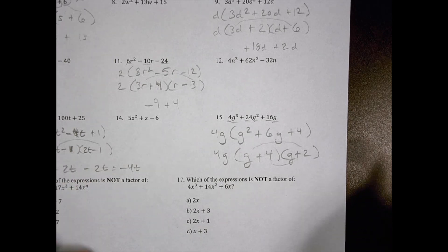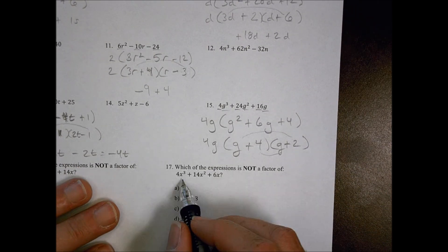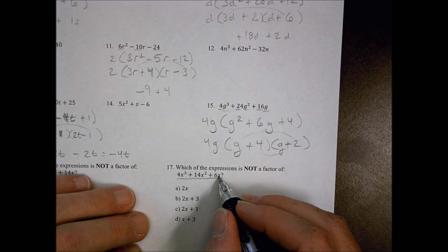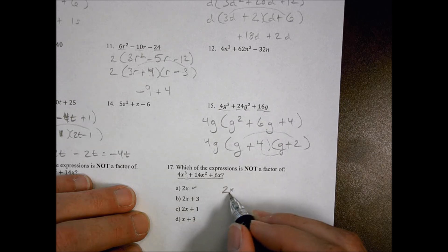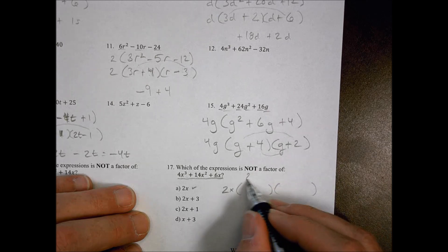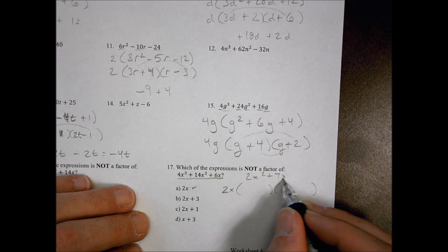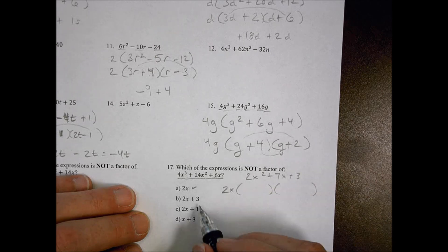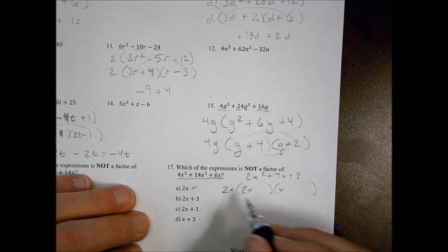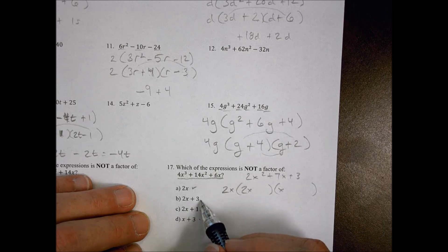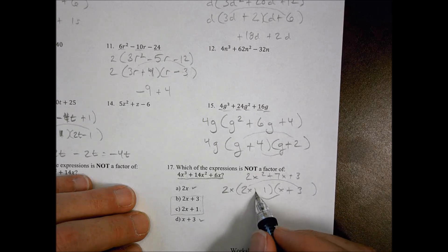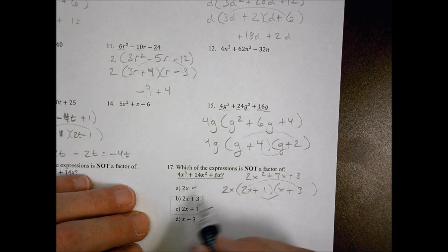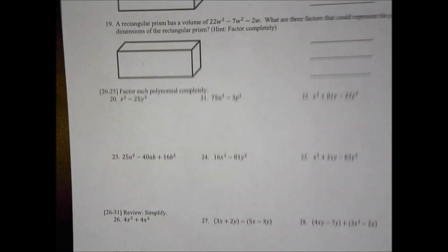Problem 17 asks which expression is NOT a factor. Right away I can take a 2 and an x out, giving 2x as one factor. After factoring out 2x, I'm left with 2x² + 7x + 3. Using 2x and x, and checking the options: x + 3 works — placing a 3 gives outside and inside terms of 6 and 1, adding to 7. So 2x + 1 is also a factor. The expression that does NOT belong is identified from the remaining choice.